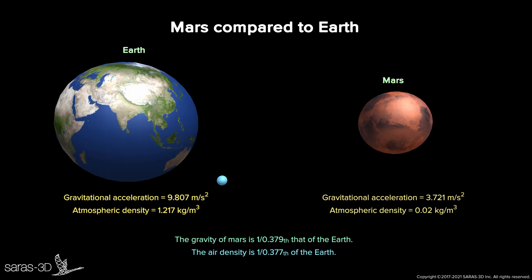Now, what if we take this helicopter to Mars? The gravitational acceleration of Earth is 9.807 m/s², whereas for Mars it is 3.721 m/s² — so Mars gravity is about 0.379 times that of Earth. Similarly, the atmospheric density of Earth is 1.217 kg/m³, whereas for Mars the value is 0.02 kg/m³ — meaning Mars air density is about 0.377 times that of Earth.